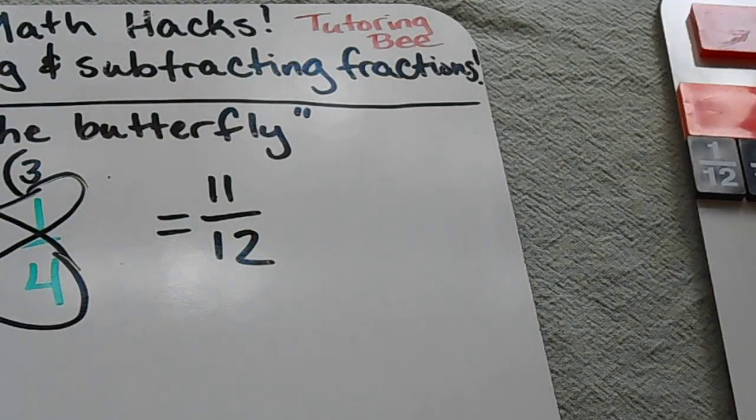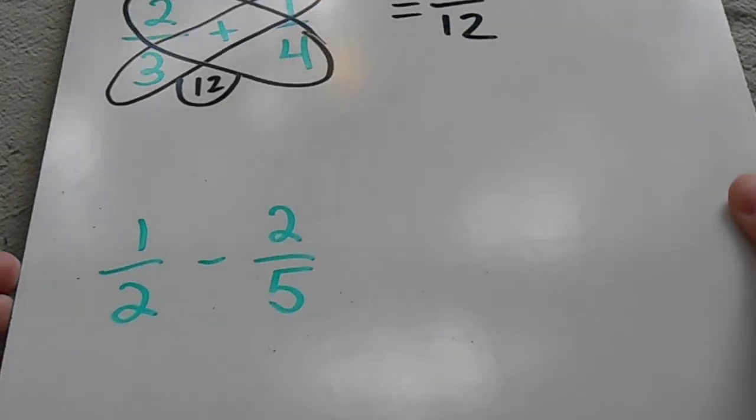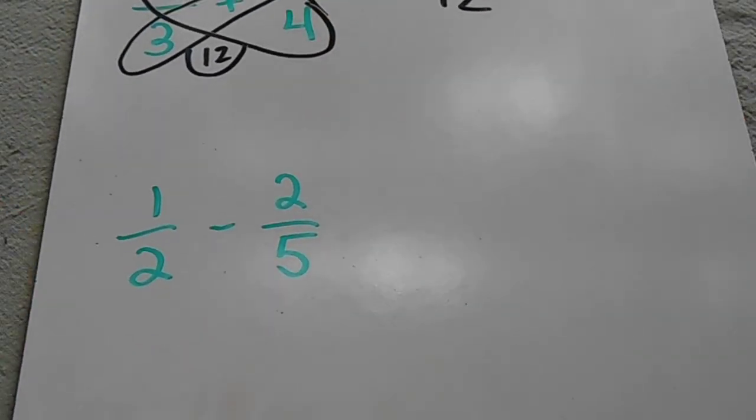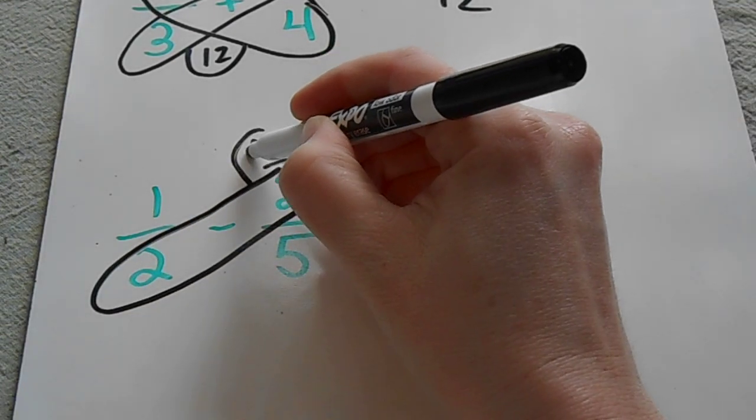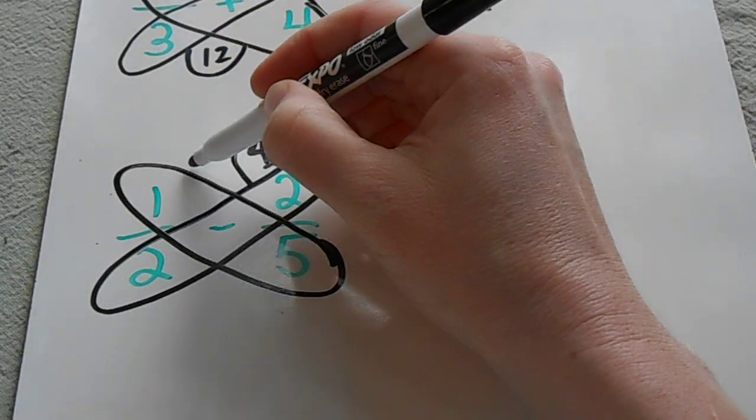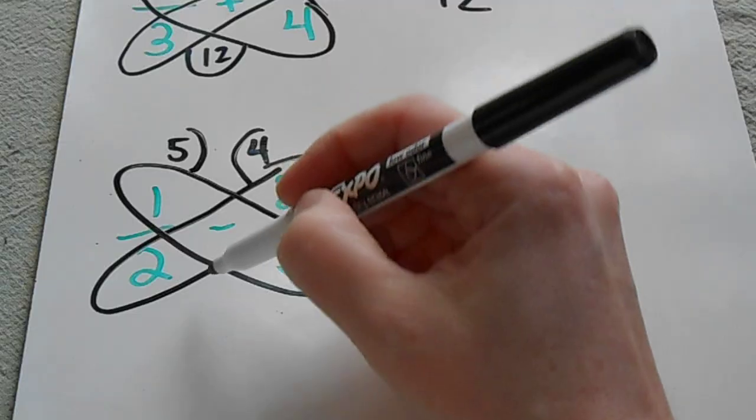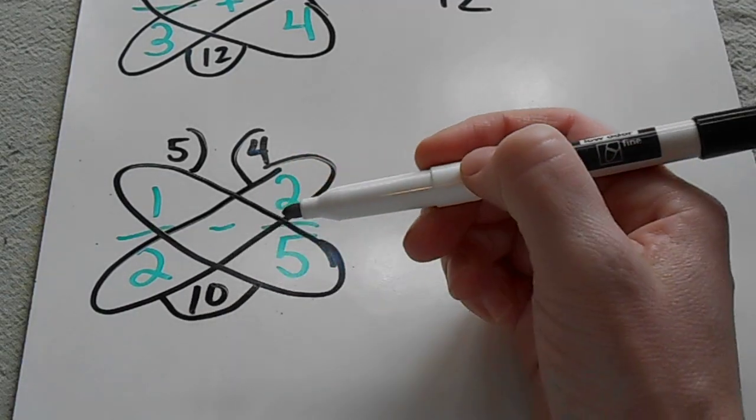This works also for subtraction as well. I have a subtraction problem for you. So again, I'm going to make my butterfly and multiply the two numbers together. Two times two is four. And then I'm going to multiply these two together. One times five is five. And then multiply my two bottom numbers. Two times five is ten.